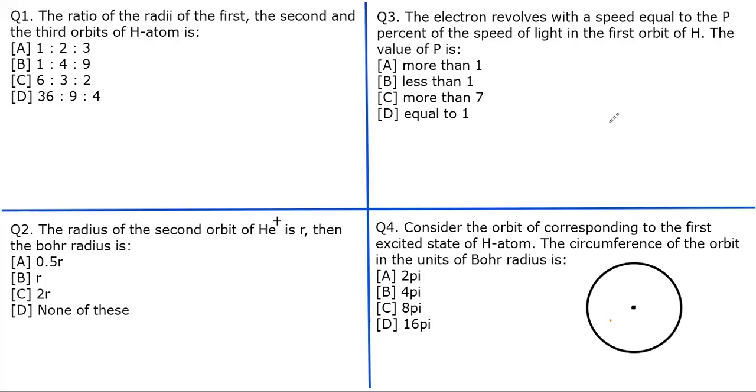Hi students, welcome to yet another DBP of atomic structure. There are some questions based on Bohr model, now let us attempt them. The first question: the ratio of the radii of the first, the second, and the third orbits of hydrogen atom is. Now let's see, so let's try to draw something here. Let this be the first orbit, then second orbit will be somewhere here and third be somewhere here. Now let us call them r1, r2, r3, right?